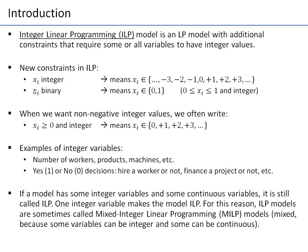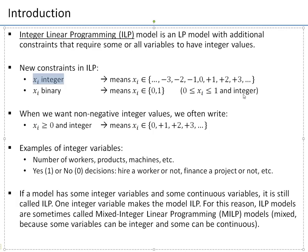We write integer constraints as 'xi integer,' meaning xi must take whole number values. This can be 0, 1, 2, 3, but also negative integers like minus 1, minus 2, minus 3. These are all integer or whole numbers.